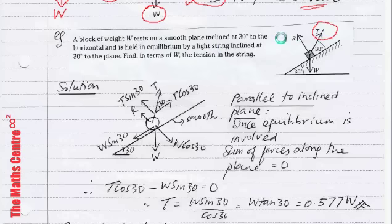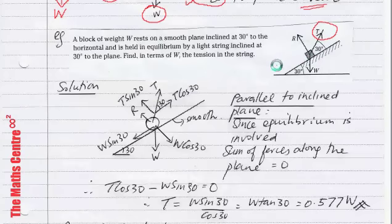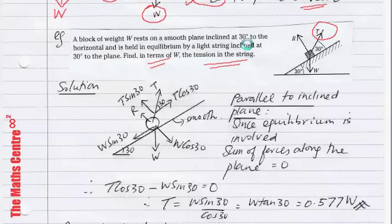This block is held in equilibrium by this string inclined at 30 degrees to the plane. We are trying to find, in terms of W, the tension in the string.